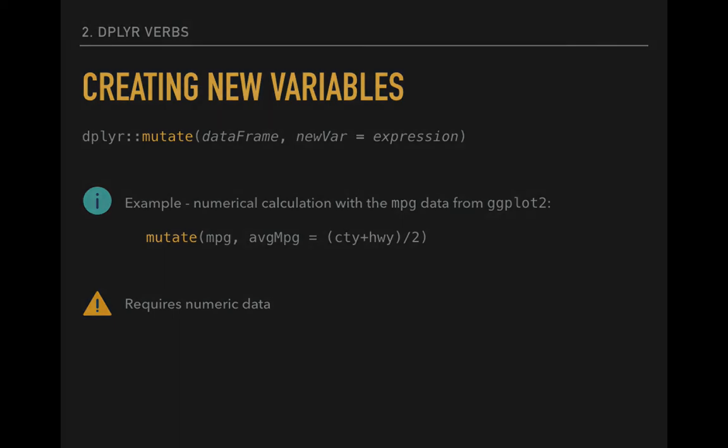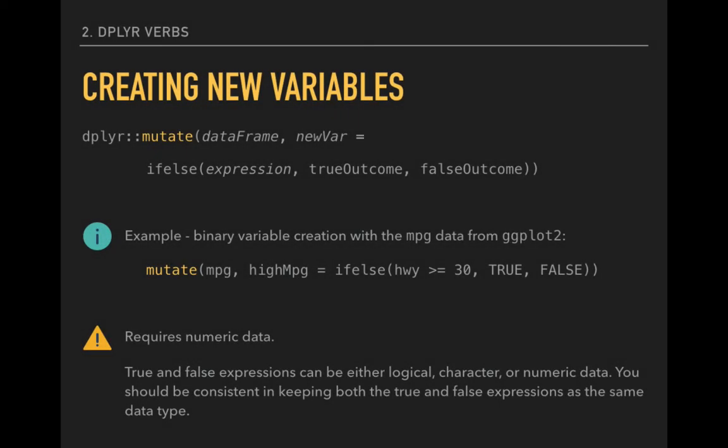We can also create binary measures easily using the mutate function combined with the if-else function. We create a new variable and provide an expression as well as predetermined values if the expression is true and if it is false. For example, we could create a binary measure to evaluate whether cars have high fuel efficiency. If they have a MPG value of at least 30, the new logical variable is set to true. If the car does not, the new logical variable is set to false. We can do the same with character data.